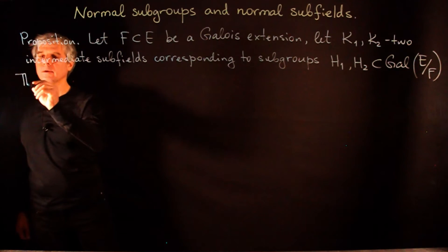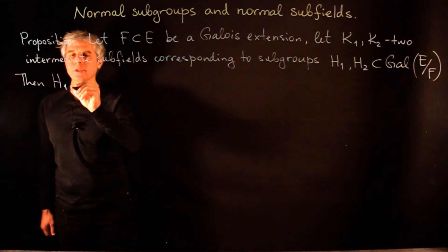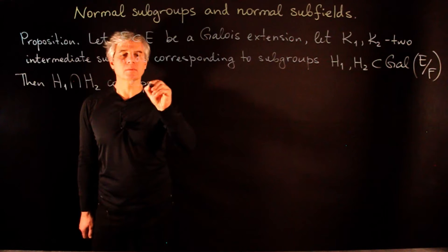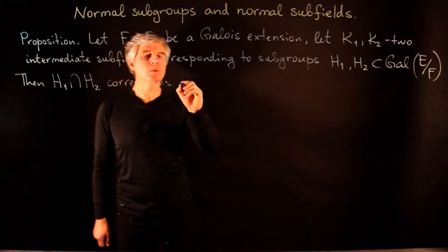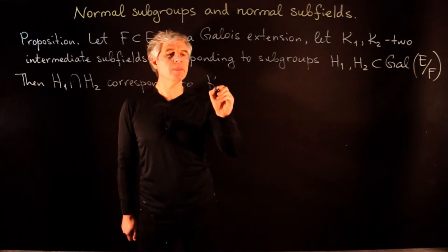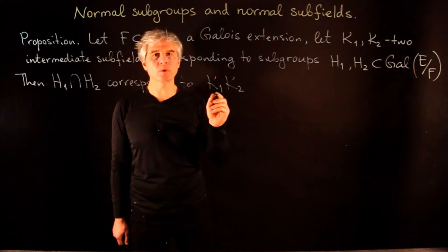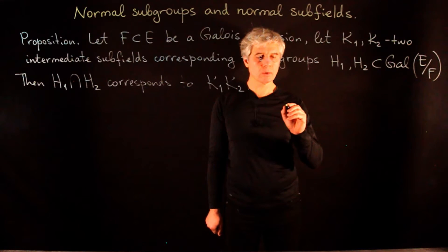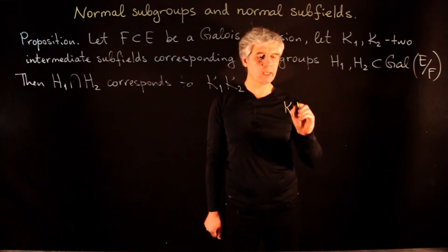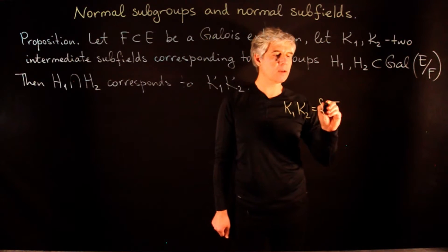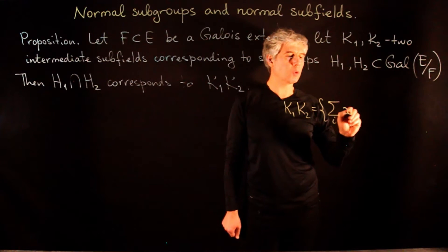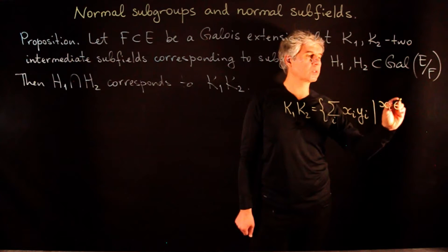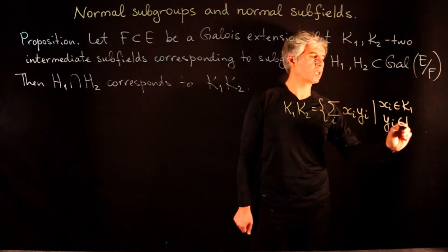Then the intersection of these two subgroups corresponds to the subfield k1·k2, which is the subfield generated by both k1 and k2. This composite field k1·k2 is the set of all sums of products xi·yi where xi belongs to k1 and yi belongs to k2.